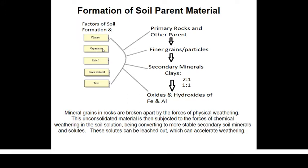Organisms also affect the kinds of soils produced through weathering. When we say organisms, we are talking about either micro or macro organisms. Examples of microorganisms include bacteria, fungi, and any microorganisms that affect the weathering or decomposition of rocks. It also includes macro animals, humans, and plants. All those factors under organisms would eventually affect the kinds of soils produced.